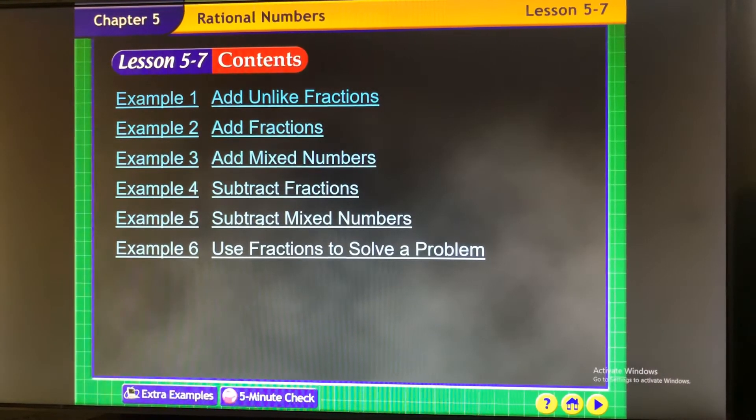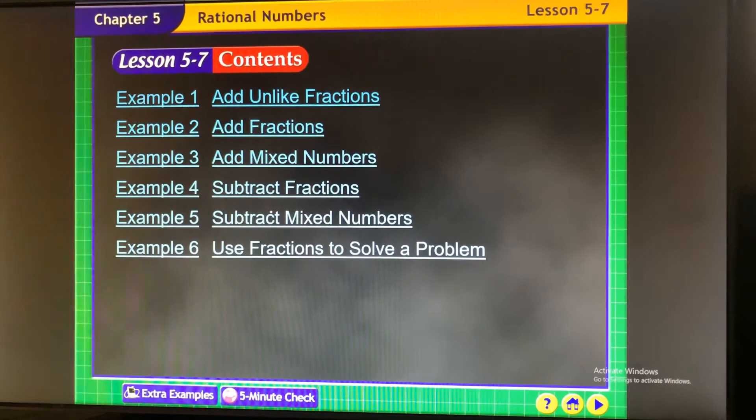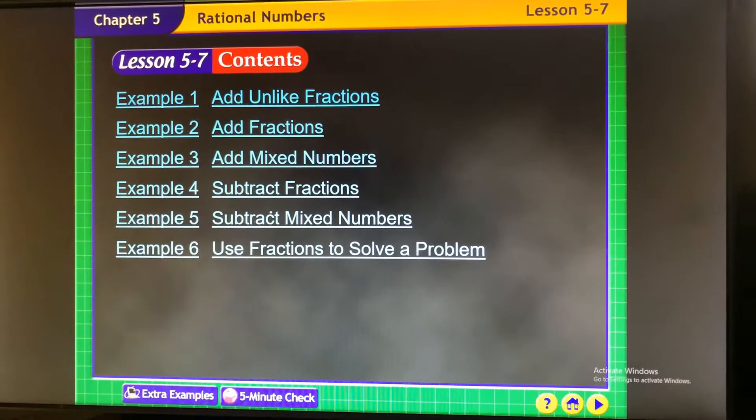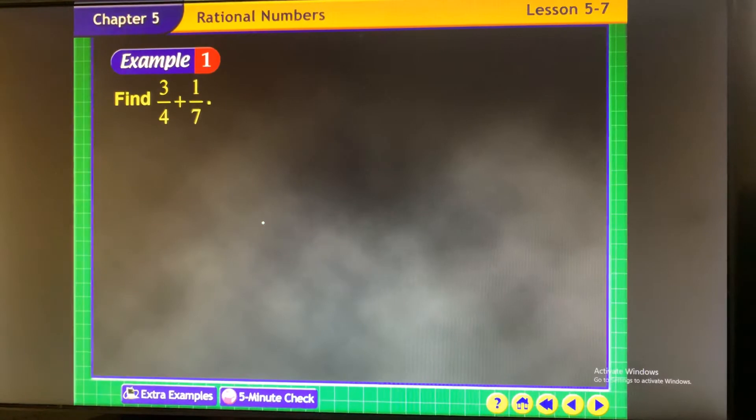So we just figured out how to find the least common denominators. Now we're going to add fractions with unlike denominators, so we're going to have to find the common denominators.